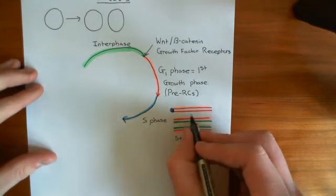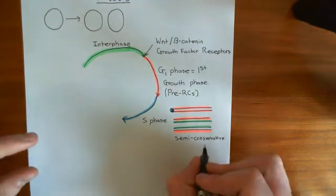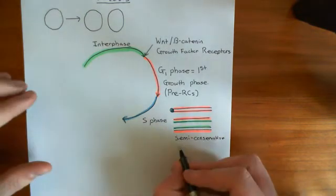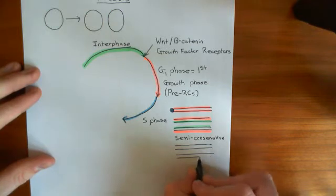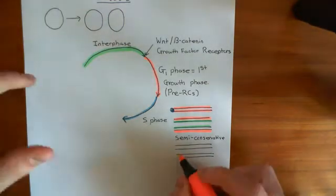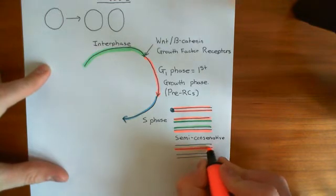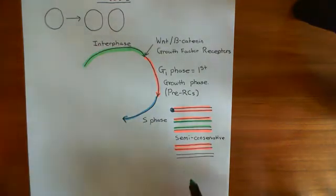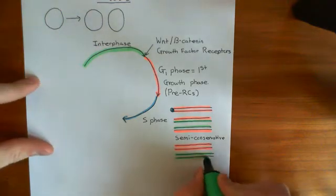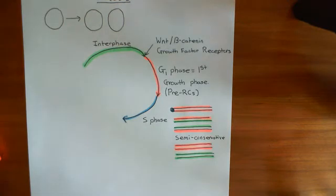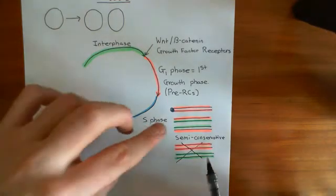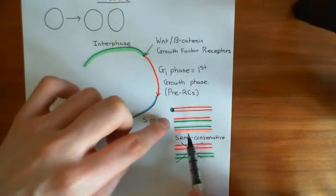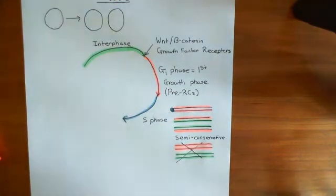It's called semi-conservative replication because in each of the two new double strands, you have one of the old original strands and one new complementary strand. What you don't have is both original strands together on one double strand and both new strands together on another. Instead, each new double strand contains one original strand paired with a new complementary strand.